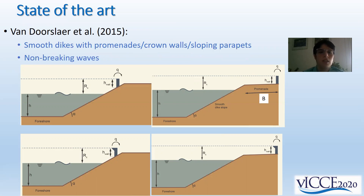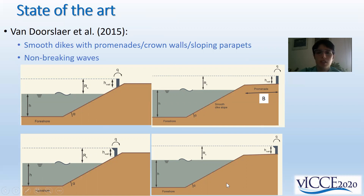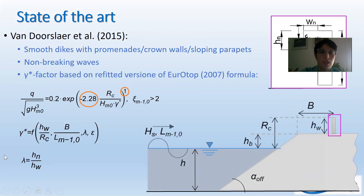The state of the art begins with the experimental campaign conducted by van der Sleer et al. in 2015 in the laboratory of the University of Ghent. This is the first systematic analysis of the effect of crown walls and parapets on the wave overtopping discharge. They analyzed different structure configurations and different combinations of such elements under non-breaking waves exclusively, and proposed the new gamma star coefficient to account for the reducing effect, to be included in the EurOtop 2007 formula.